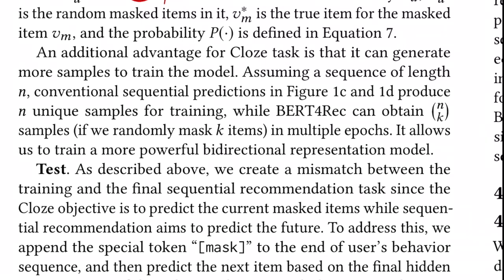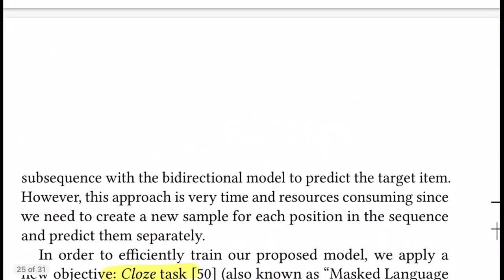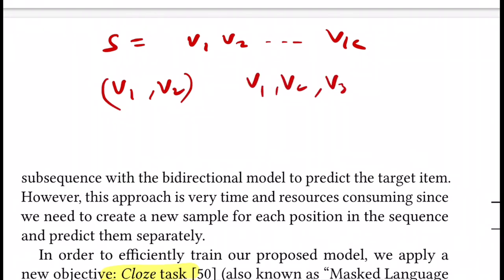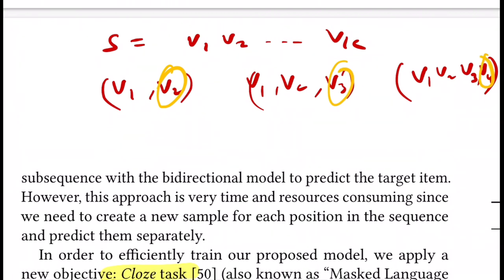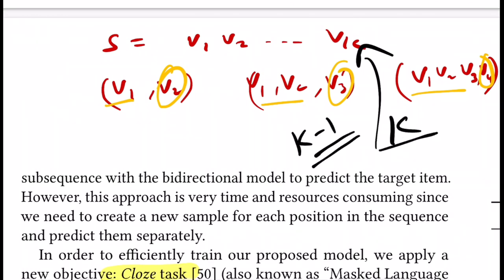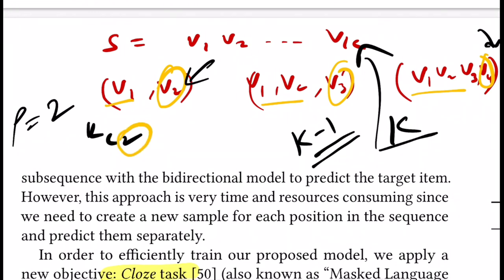Masked language modeling also offers a data generation advantage. For a standard sequential model with sequence length k, you can generate at most k−1 training examples. But with masked language modeling, if you mask ρ items, you can generate k-choose-ρ combinations — far more examples from a single sequence. This significantly increases the training data available.